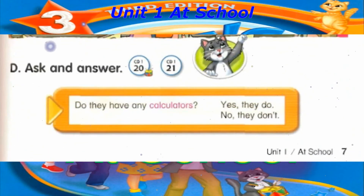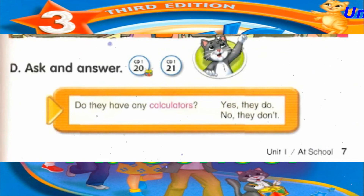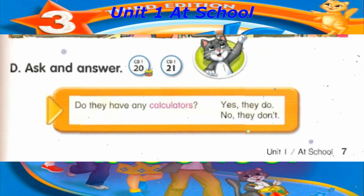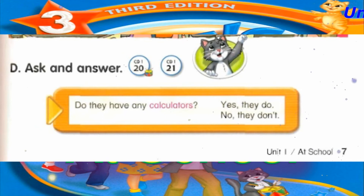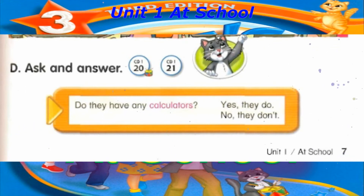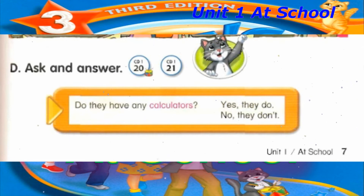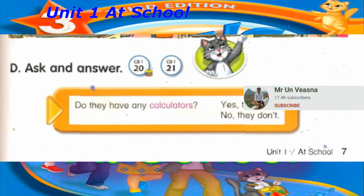Track 20. D. Ask and answer. Do they have any calculators? Yes, they do. Do they have any calculators? No, they don't. Do they have any calculators? Yes, they do. Do they have any calculators? No, they don't.